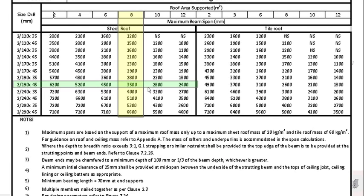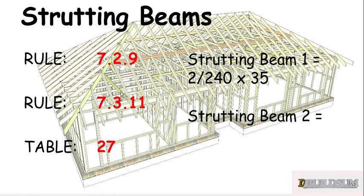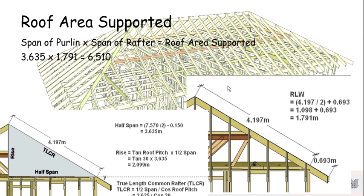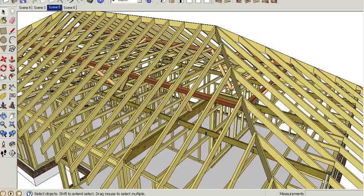Going back to our table with 3.5 metres, we can use two 190x45s. However, using our rule of efficiency and minimum end section, we're probably better off using two 240x35s to get the least amount of timber to do the same amount of work. So for that particular beam we can use two 240x35s. There's another beam in this roof so we need to look at that one as well.